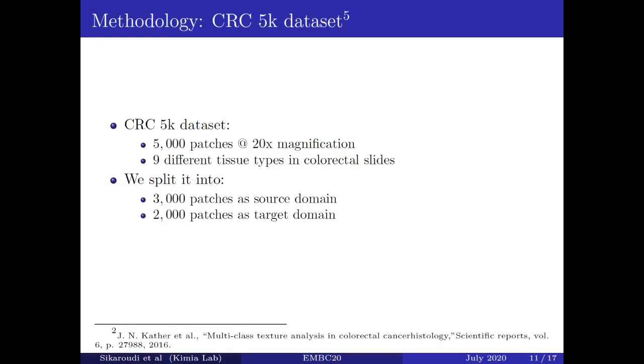Another dataset which we have used in our experiments is CRC 5K dataset, which contains 5,000 patches extracted at 20x magnification, and it contains nine different tissue types of colorectal slides. We split it into 60% and 40% cuts. The 60% of the data have been used for training of our triplet network, and 2,000 patches have been put aside for the matter of target domain.